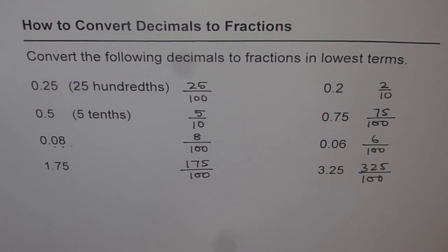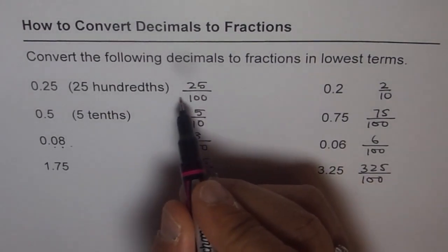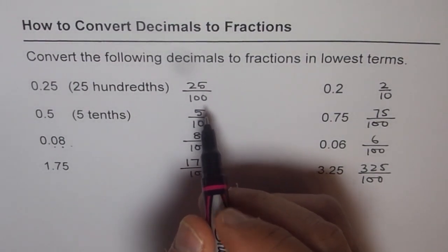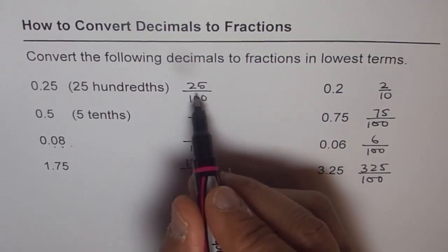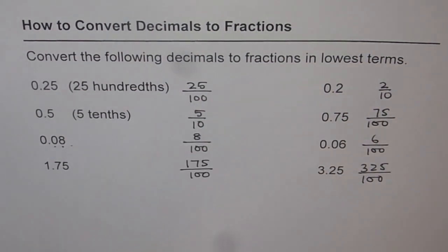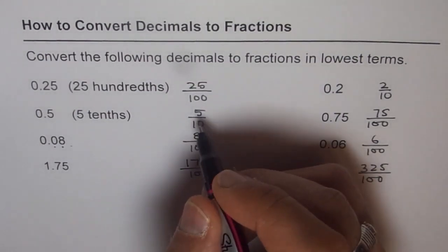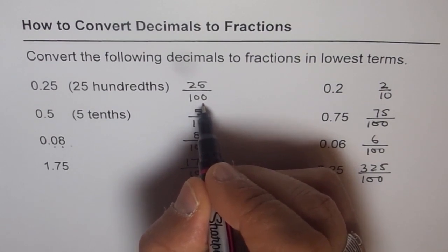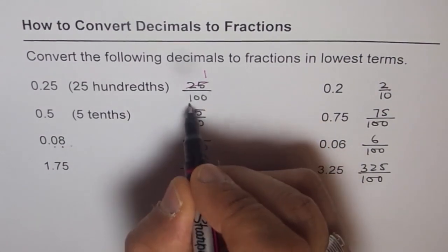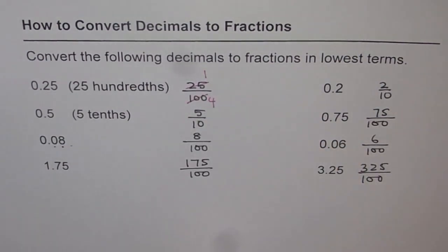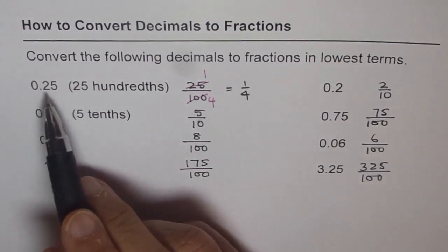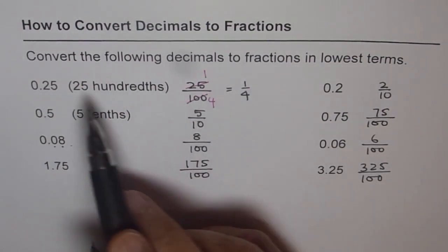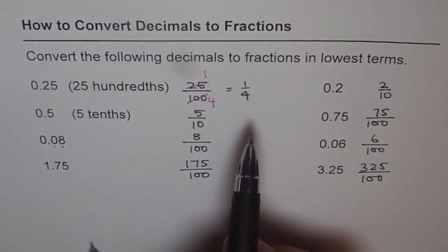Now next part is to write them in lowest terms. So lowest terms means you have to constantly divide by common factors. Now first one 25 and 100. You know there are four quarters. 25 is a quarter. So there are four quarters in a dollar. So 25 times 4 is 100. So if you divide by 25 it would be 1, and if you divide this you get 4. So your answer is 1 out of 4. So 0.25 is 1 fourth. It makes sense. 25 cents is 1 fourth of a dollar.